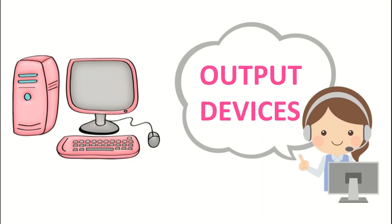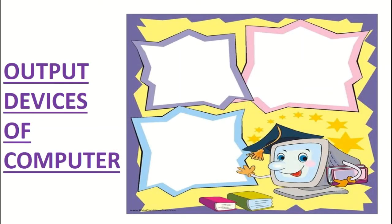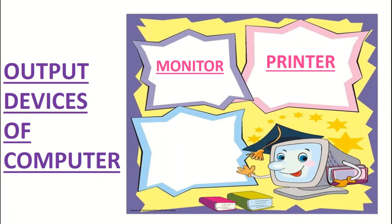In a computer, an output device is typically a hardware equipment which converts the information of the computer into readable form. The different output devices of the computer that you are going to learn about are: monitor, printer, and speakers.